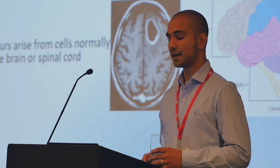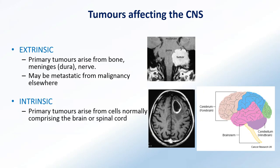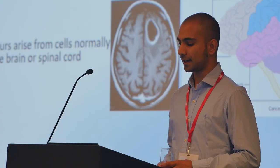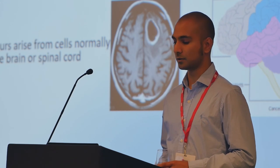Certainly in adults, it's very common to get tumors arising from the meninges. But they can also be metastatic - malignant tumors that have arisen in other parts of the body, other solid tumors that then find their way up into the brain. The second category is what's called intrinsic tumors, and these are the classical primary tumors that occur in the brain, normally comprising brain cells or cells in the spinal cord.